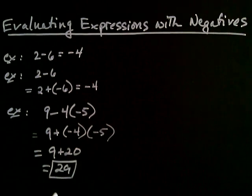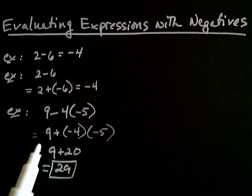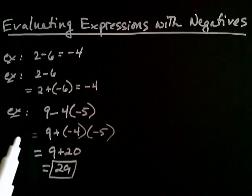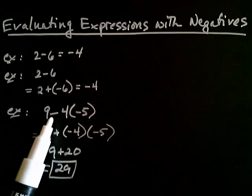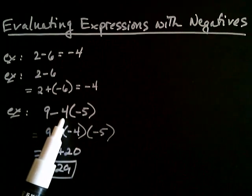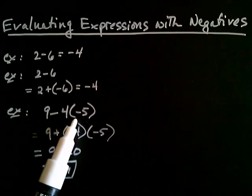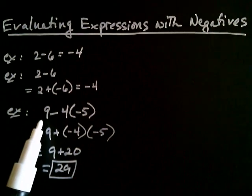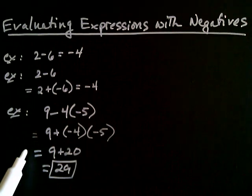You might say that still looks more complicated, and I'd agree. But here's how people actually think about it — nobody really writes the intermediate step. People think to themselves: this subtraction sign goes with the 4 to create negative 4, and negative 4 times negative 5 is positive 20, then add the 9. People typically jump straight from the start to that final step.